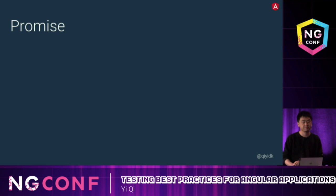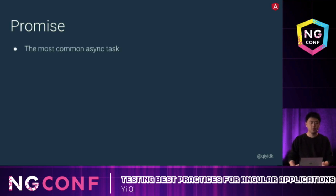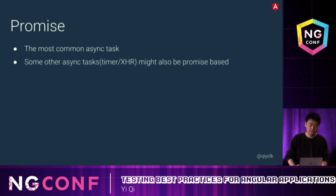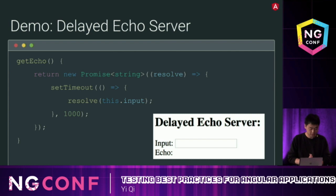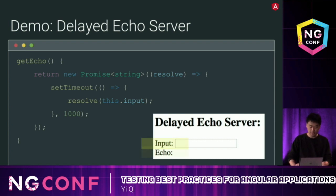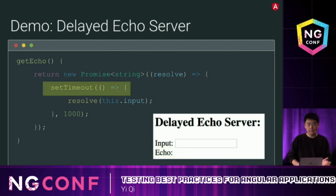Promise is the most common async task, and even some other async tasks like timers or XHR might also be Promise-based. To illustrate this, we have a demo — a very simple demo called the delayed echo server. We have an input field and an echo field. When we type something, it gets echoed to the echo field. Instead of echoing it directly, we add a setTimeout with a one-second delay to make it async.